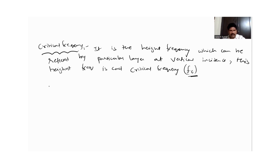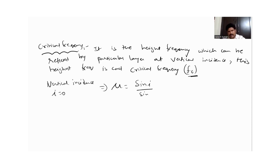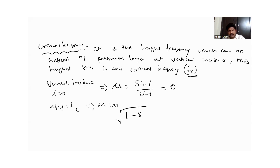For vertical incidence, the angle of incidence I is equal to 0. The expression for the refractive index mu is equal to sin I divided by sin R. So if I equals 0, then mu equals 0.